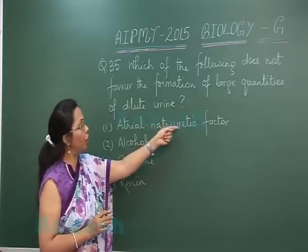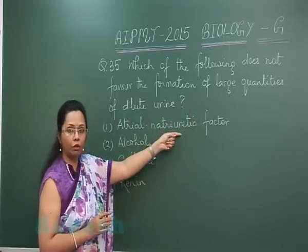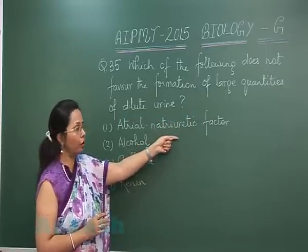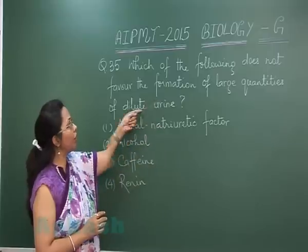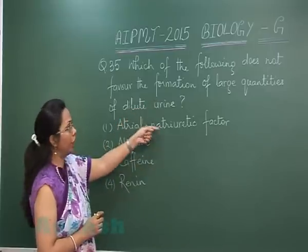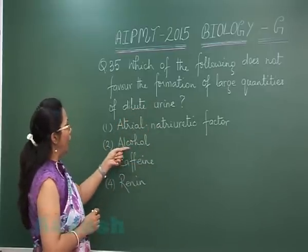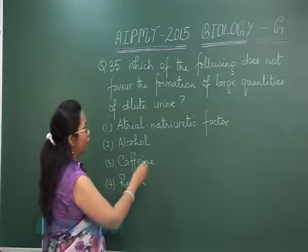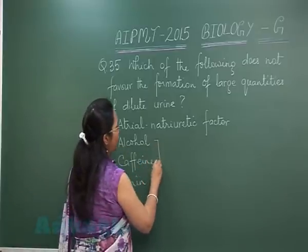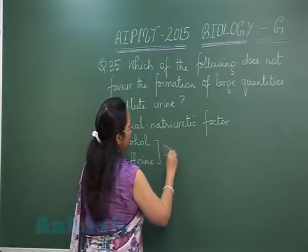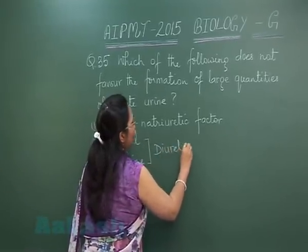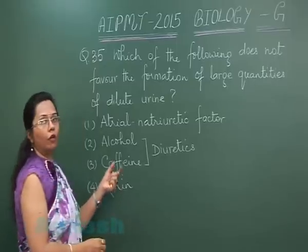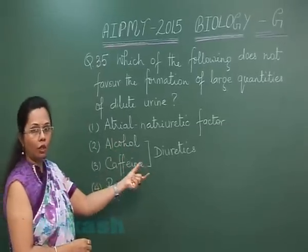This leads to natriuresis, that is loss of sodium in the urine and loss of water also in the urine, so the urine will be dilute. Alcohol and caffeine are both diuretics, meaning these also lead to a lot of water passing along with the urine.